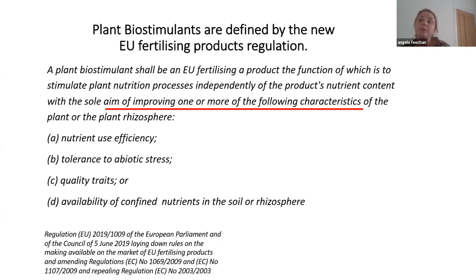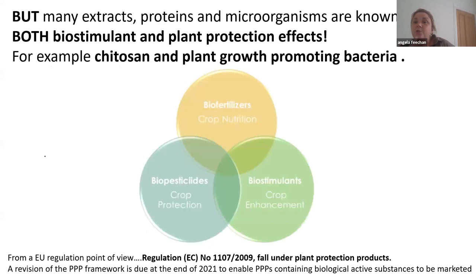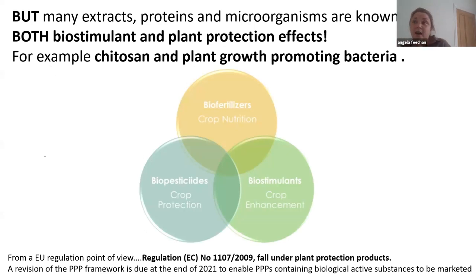Currently there is no obligation to register a biostimulant. But the reality is that if you talk about something being a biostimulant, it probably does something else as well. There are these categories — biostimulant, biopesticide, biofertiliser — but the reality is that products probably have overlapping effects. Chitosan would be an example of something that probably has an overlapping effect in terms of being both a biostimulant and a biopesticide. From an EU point of view, anything that has an impact on disease is a biopesticide and would fall under plant protection product regulation.